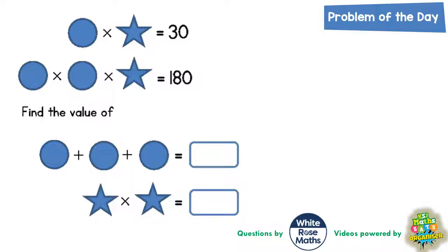What clues have we got to go on? Well, we're told that a circle times a star equals 30, and a circle times a circle times a star equals 180. Now the problem we've got is that a circle times a star equaling 30 could take various values, because there's various pairs of numbers that multiply together to make 30.